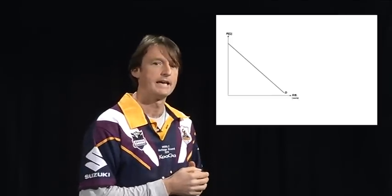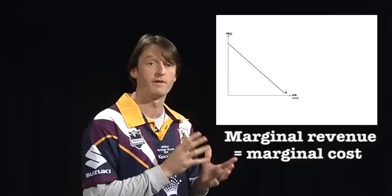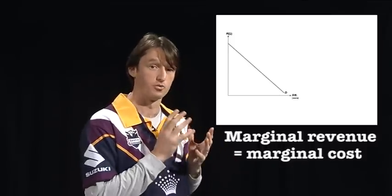Assume the team is a monopoly in its local market, at least in its own sport. Here, the profit maximising quantity of tickets is where marginal revenue equals marginal cost.